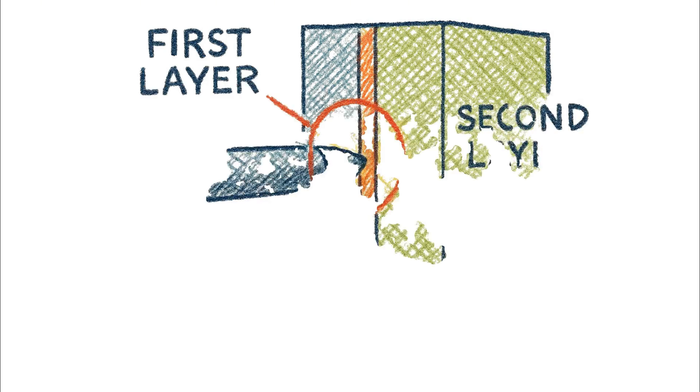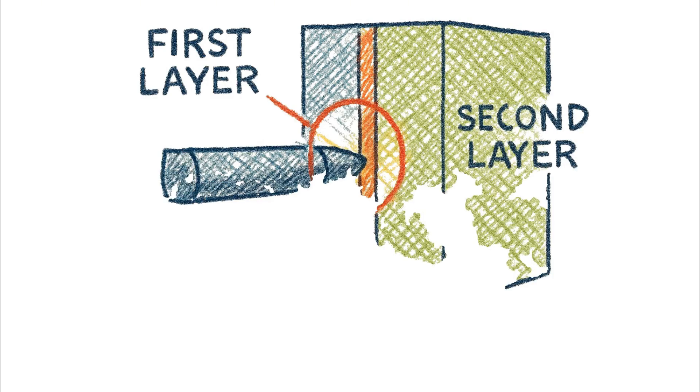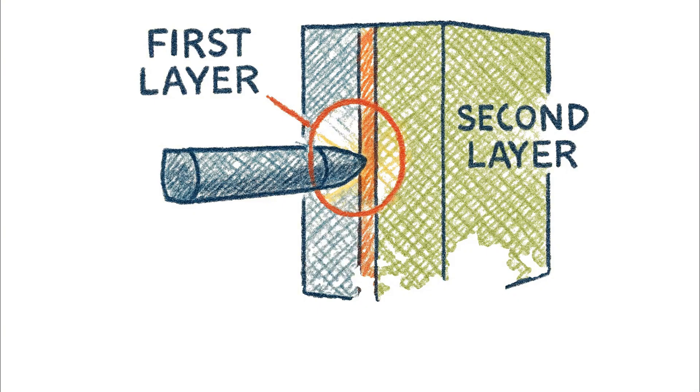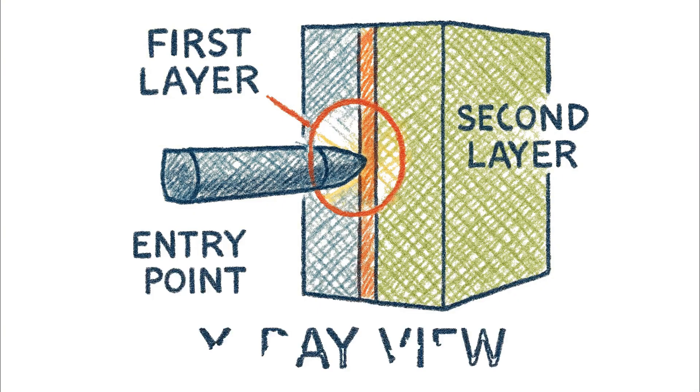Let's analyze the x-ray view. The entry is precisely in the seam, and examining the rear of the first layer, penetration is confirmed. Because the bullet passed completely through the first row of bags and is lodged somewhere in the second.